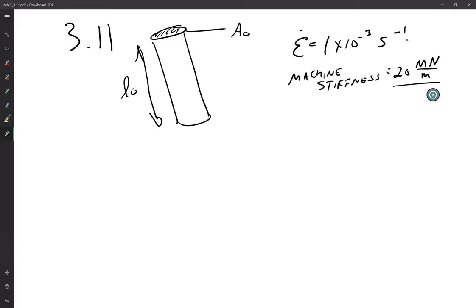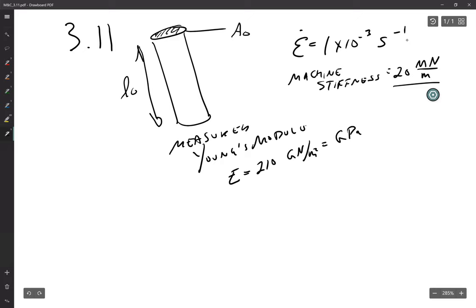And from this, we're also given that the measured Young's modulus E is equal to 210 giga pascal, or giga newton per meter squared.